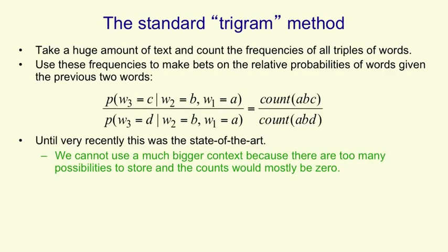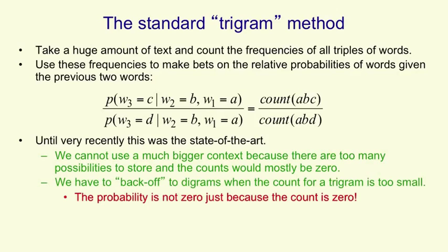Even for two word contexts, there's many contexts that you will never have heard. For example, if I say dinosaur pizza, that's probably a string of two words that you've never heard before. For cases like that, we have to back off to individual words. So after dinosaur pizza, you predict the next word by just seeing what's likely to come after the word pizza, because you've never heard dinosaur pizza before. What you mustn't do is say that probabilities are zero just because you haven't seen an example. That's clearly not true.